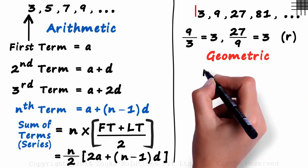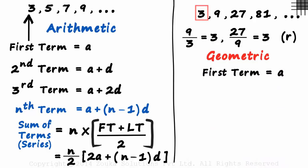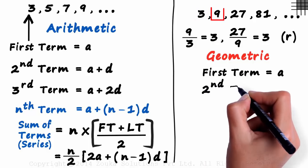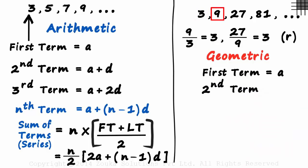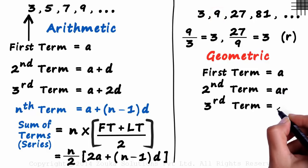Let's assume the first term of this sequence as A. What will be the second term then? It will be A times the common ratio R. And the third term? It will be A times R squared.